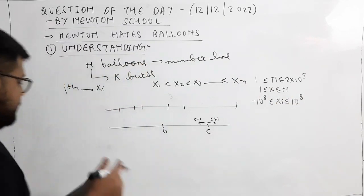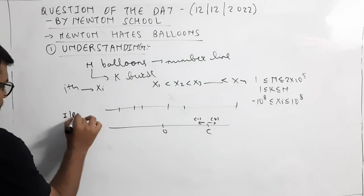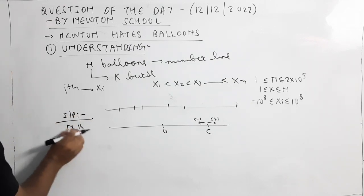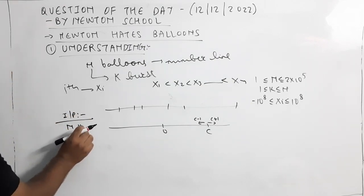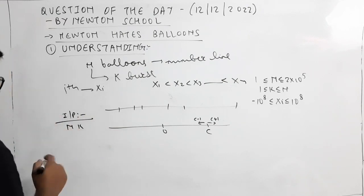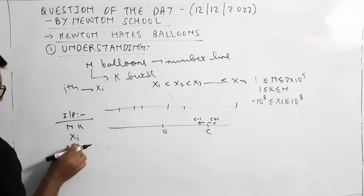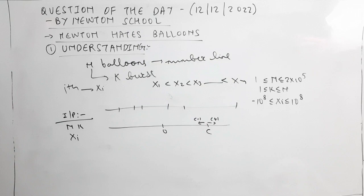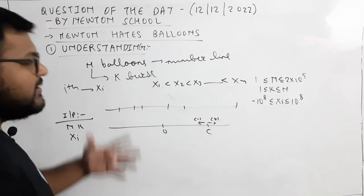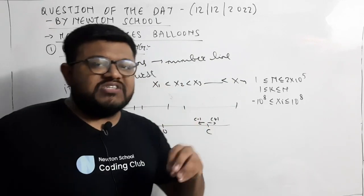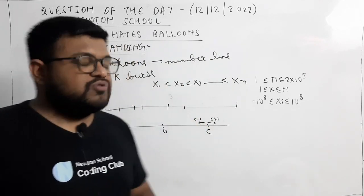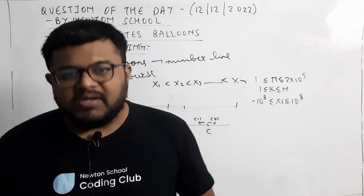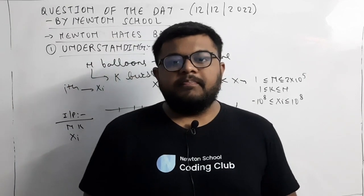Input में सबसे पहली line में दो integers हैं — N, the number of balloons, and K, number of balloons to be bursted. Next line में N integers दिये गए हैं जो कि N balloons के coordinates हैं। हमें minimum time बताना है for Newton to burst exactly K balloons. I hope question clear है, अब इसके concept पे move करते हैं।